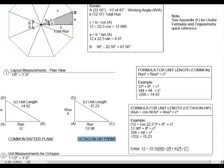All right, this is the unit measurement for your octagon hip. Between A and C, this is a run of 12.98. Now this is the same as your hypotenuse C. Once you punch in that equation, you get 12.988. Between point C and point D, this is your unit length.